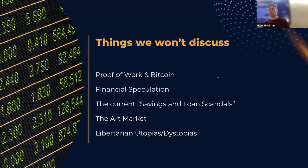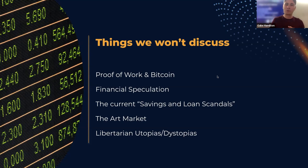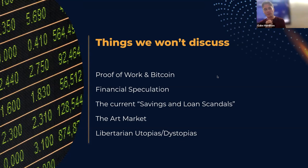Some areas we'll discuss — there's a lot in blockchain. We're not going to talk about some of these areas. Proof of work and Bitcoin we won't really talk about much. Financial speculation — if you're here to get rich on crypto, this is not the talk for you. You can go work on Wall Street; they'll let you bet on most anything there. And there's a lot going on in the crypto space right now in terms of big exchanges failing and things.